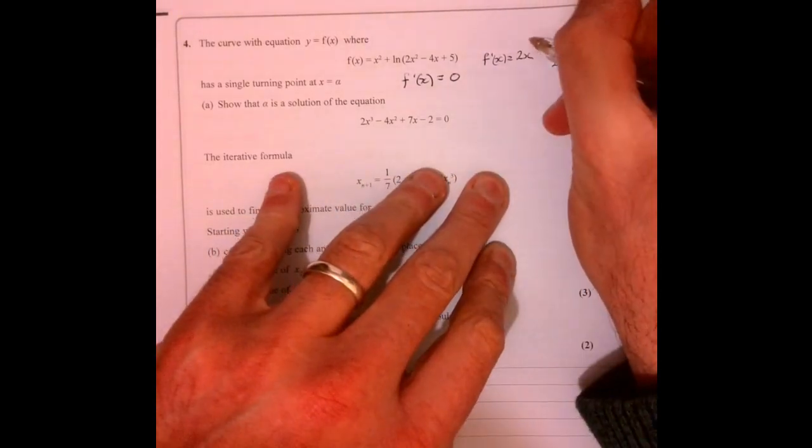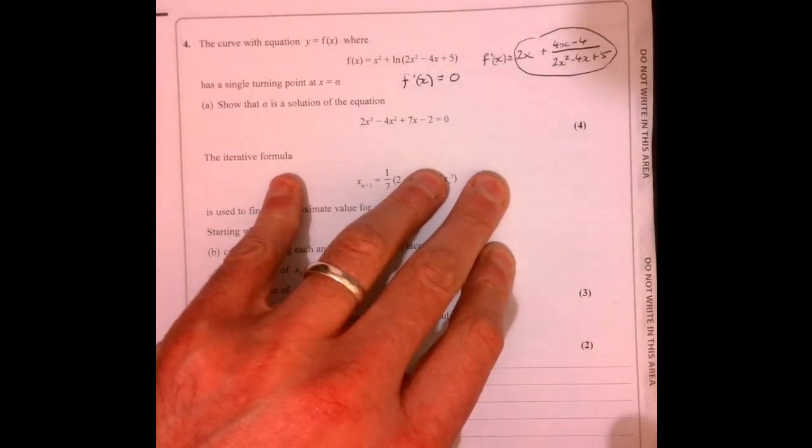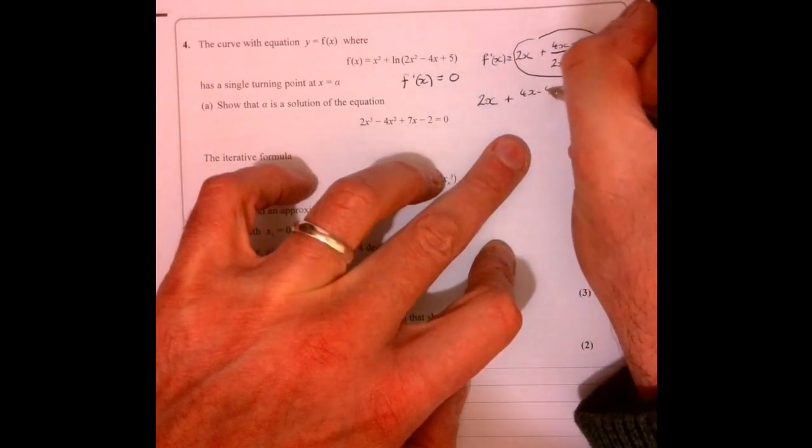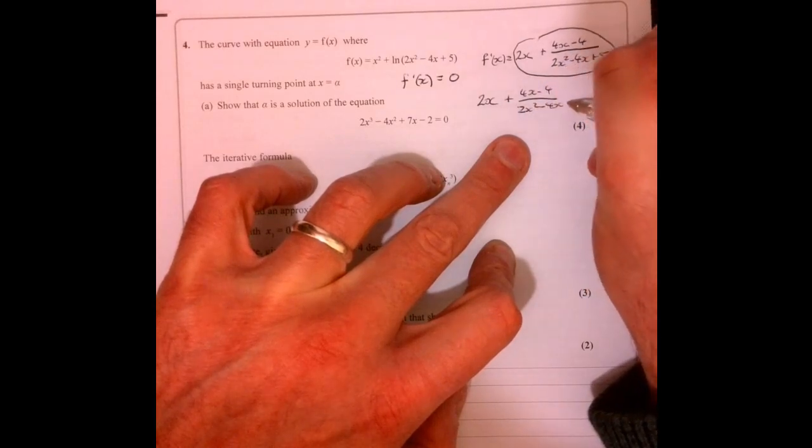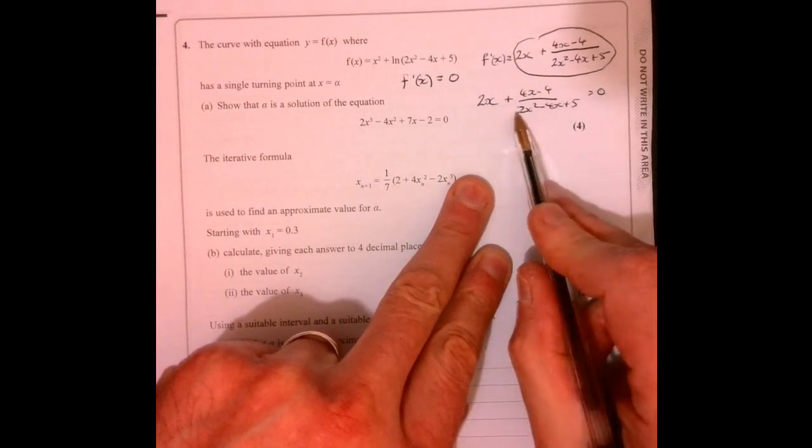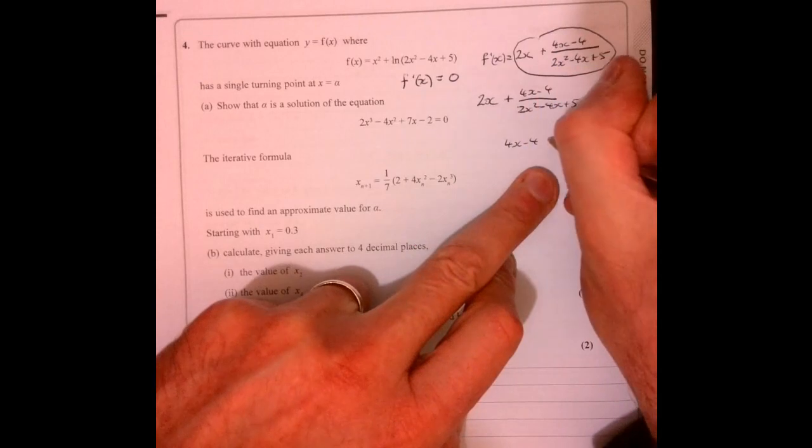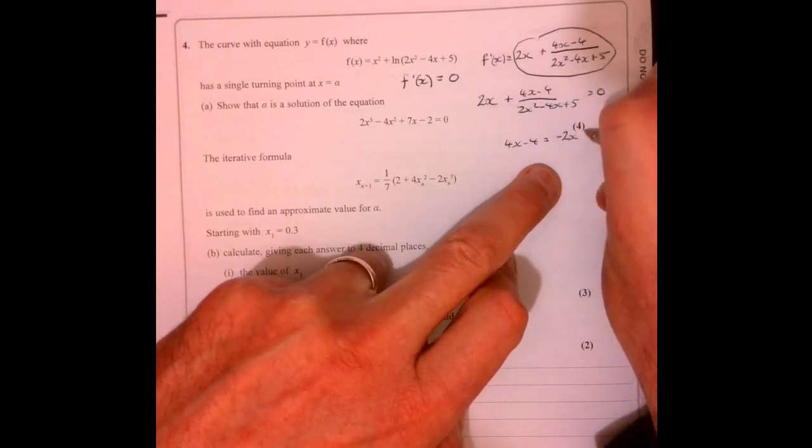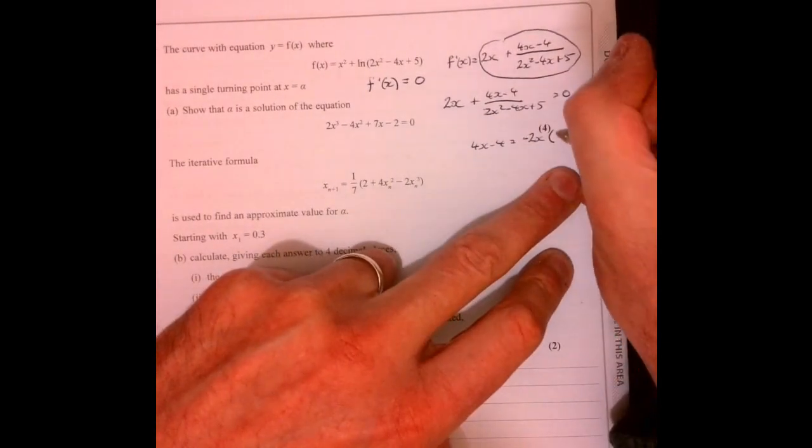What are we interested in? We're interested in when is this equal to zero. So let's have a little play with this. So plus 4x minus 4 over 2x squared minus 4x plus 5 equal to zero. Take away the 2x from both sides, multiply by this, and that gives you 4x minus 4 equals, so remember you've got minus 2x, and then you've multiplied by this bit here.